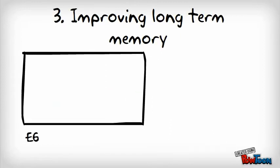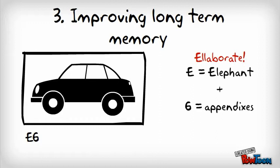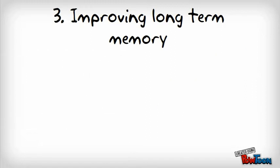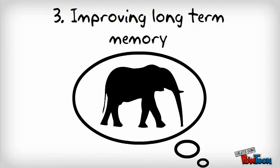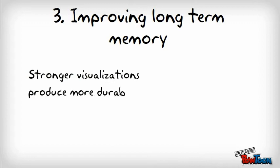For example, if I park my car in the E6 slot at a parking lot, it would be easier for me to remember where it is if I elaborate something like: E as in elephant, plus 6 as in the six appendages that elephants have. Instead of trying to remember E6, I can now recall the image of an elephant and deduce from it where I parked my car.